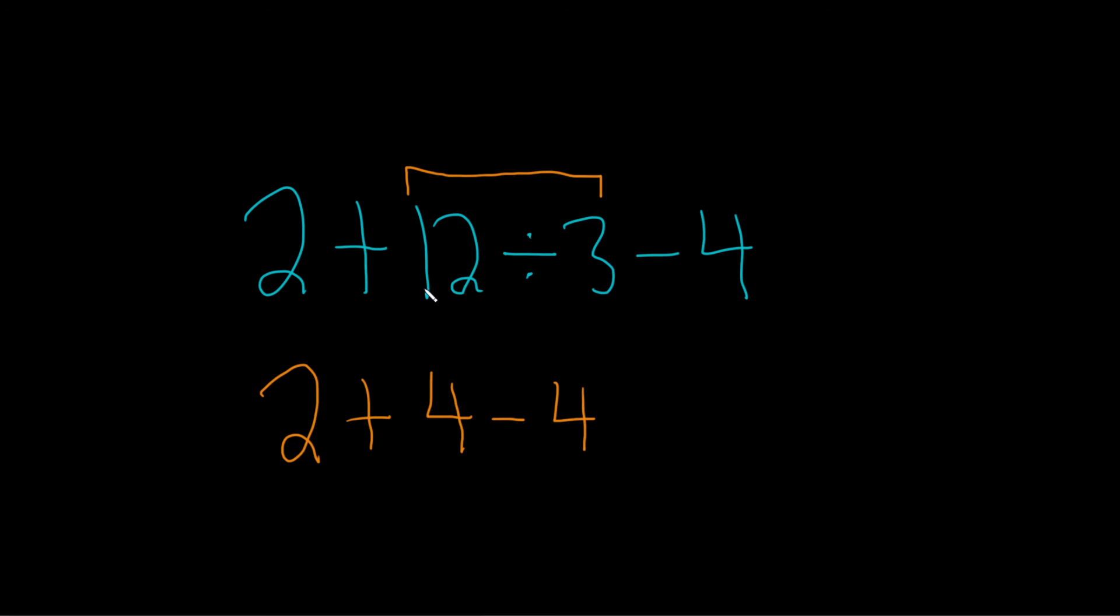So now that we're done with the multiplication, or rather the division, we go to addition and subtraction, and we work left to right. So 2 plus 4 is going to be 6.